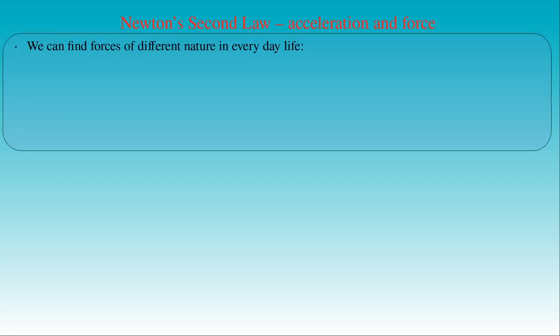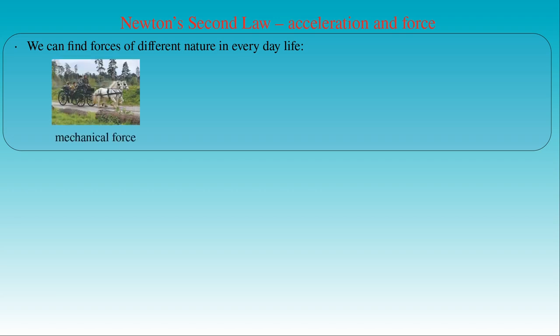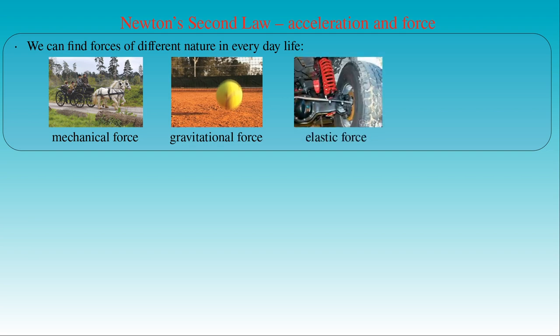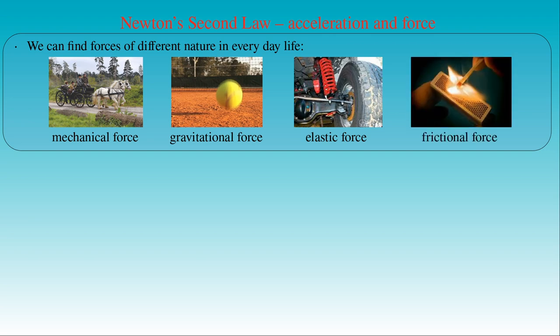In dynamics, force gained a general meaning, since arbitrary objects or physical processes can produce effects causing acceleration in the motion of a body. We can find forces of different nature in everyday life. A typical example of mechanical force is the traveling carriage drawn by horses. Freely falling or thrown bodies are subjected to the gravity of the earth, and their acceleration is due to gravitational force. Suspension springs applied in vehicles can compensate uneven road surfaces, since the elastic force exerted by them is able to absorb shocks. Friction between surfaces can decrease the velocity of a body thrust on a plane surface.